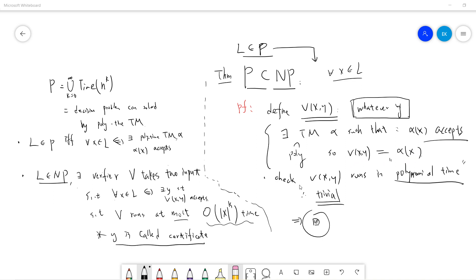Okay, so, the easiest is that check v of x, y runs in polynomial time. This is trivial, right? Because v of x, y is defined to be alpha x, and we already know that since x belongs to P, so alpha of x runs in polynomial time.